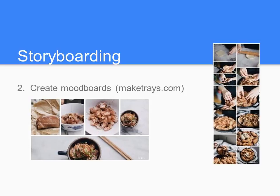I also create mood boards before specific shoots. If you are dipping your toes into a completely new style of photography, mood boards are really great for inspiration. I use a site called Make Trays, which easily compiles a bunch of photos into a mood board for you. This comes before storyboarding — if you are not sure what kind of look you are going for, you can create a mood board with shots you find inspirational, look at them together, and find a cohesive element to guide your own work.